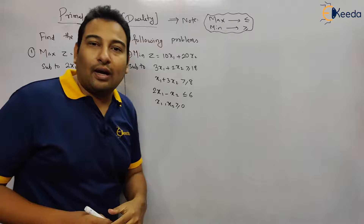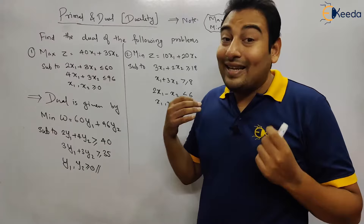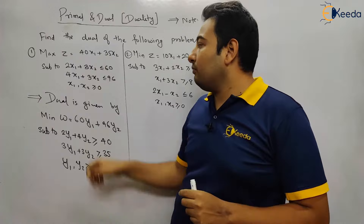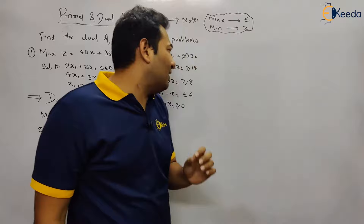So this is the dual of the above primal. It is very clear how to write the dual: for the objective function, whatever is the RHS of the constraints is considered, and for writing the constraints, the coefficients of the variables are considered. Let us discuss the next example, problem number 2, and it will be very clear.